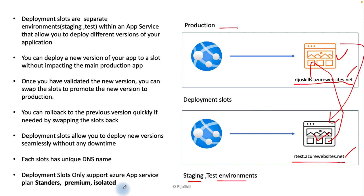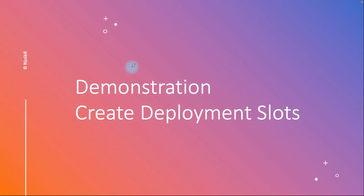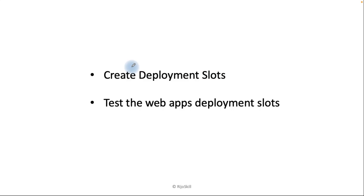For the demonstration, we will create one deployment slot in the Azure portal and test the web app deployment. We will create a copy of the same application, make some changes to it, and then swap the test environment to production. Let's go to the Azure portal.